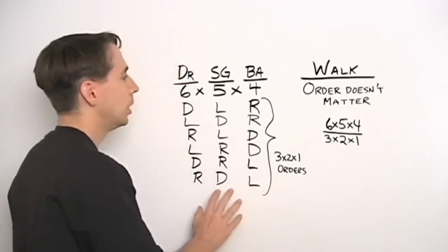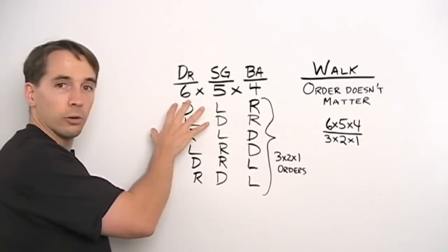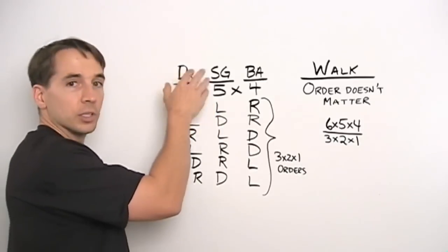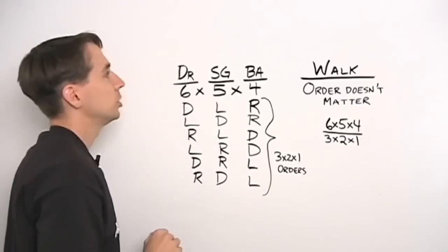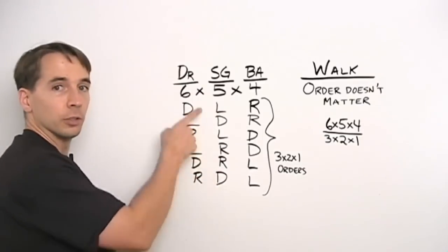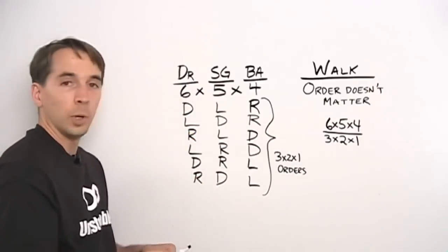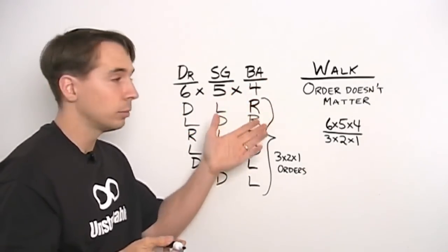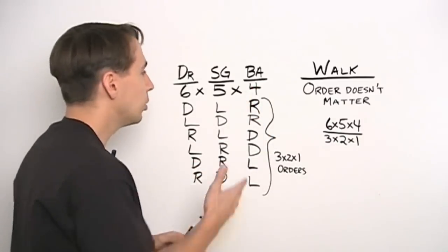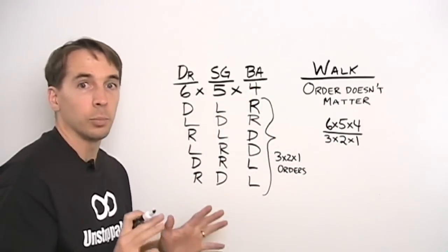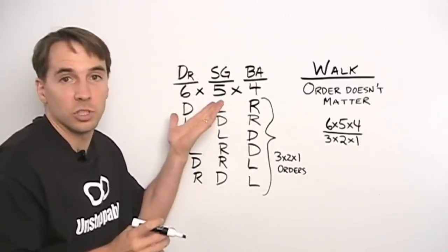Again, the whole difference between these two is when we're getting in the car, order matters. First person's the driver, next person's shotgun, next person's backseat, so these are all different when we're getting in the car, but when we're walking they're all the same. The order doesn't matter. Now we've seen this before, we gave it a fancy name, permutation, when really it's just multiplication.